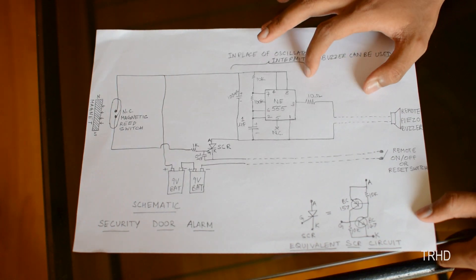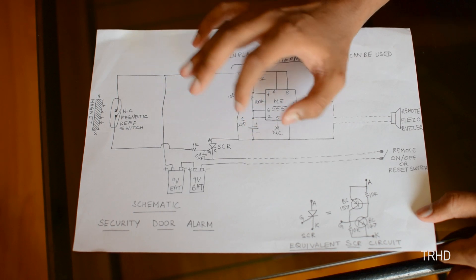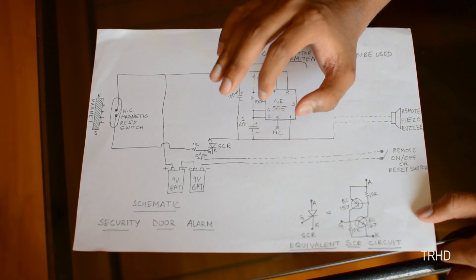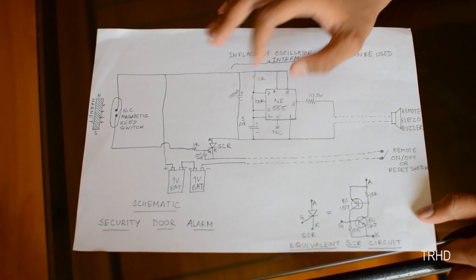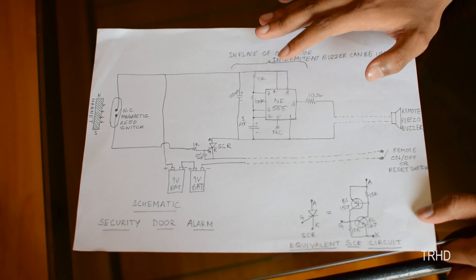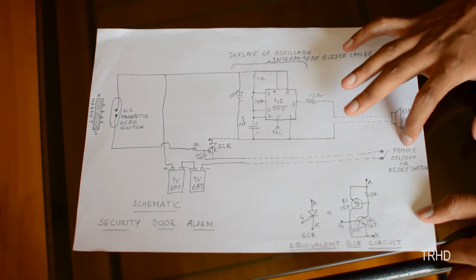To trigger the alarm in this circuit, we are using an SCR because once the SCR is triggered on, it cannot be switched off even when the door is closed. To switch off the buzzer, we have to disrupt the power supply to the SCR which can be done using this reset switch.